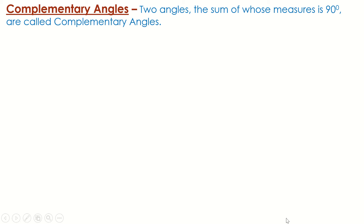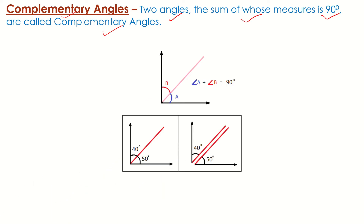Now let us talk about complementary angles. Complementary means which complete each other. Two angles whose sum is equal to 90 degrees are called complementary angles — they complete the angle of 90 degrees. For example, within a 90-degree angle, one ray forms angle A and angle B. The measurements of angle A and angle B sum to 90 degrees. Here, 40 degrees and 50 degrees are complementary because their sum equals 90 degrees.